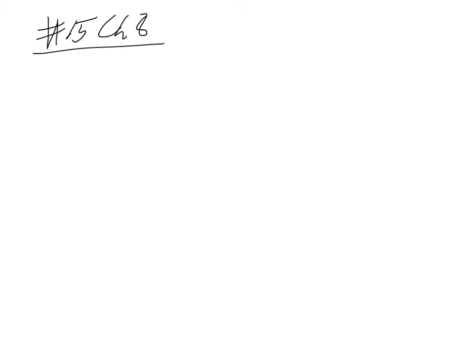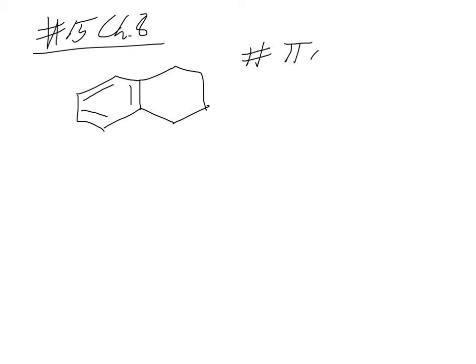We're looking at number 15 in chapter 8 in Sapling. This is an aromaticity question. The first example they show asks for the number of pi electrons, or more precisely, the number of electrons in the pi system.